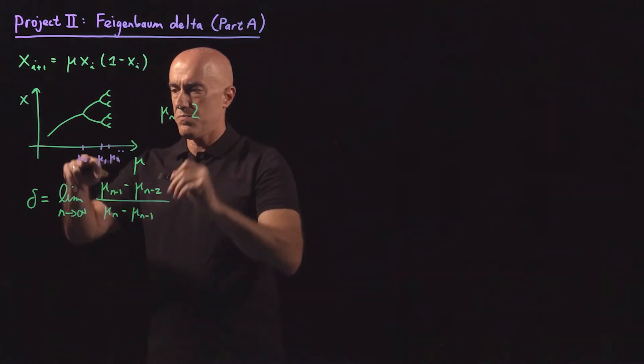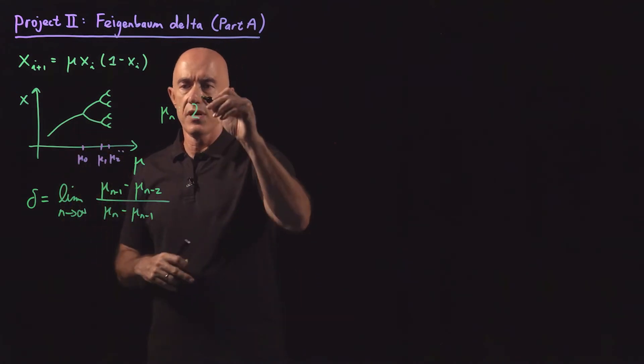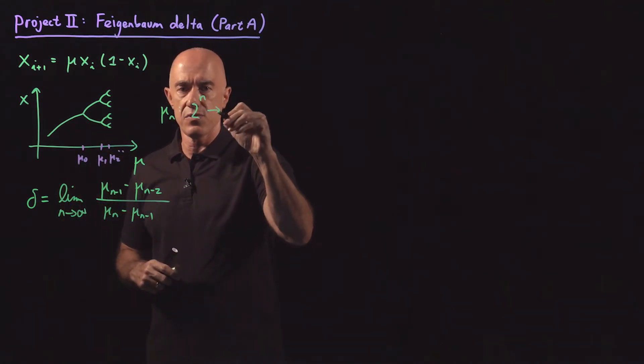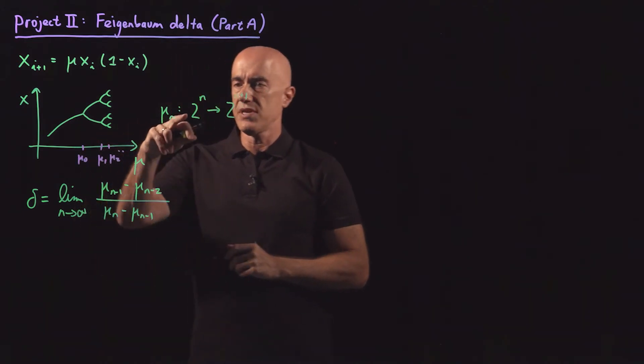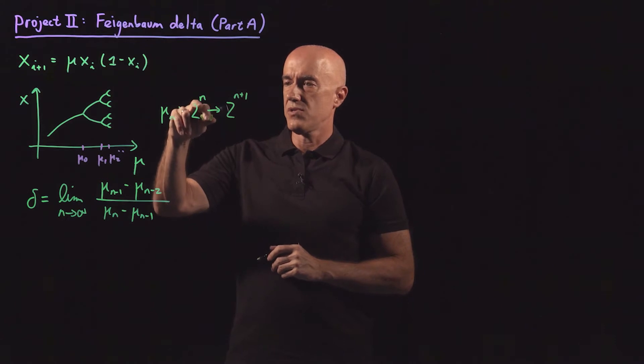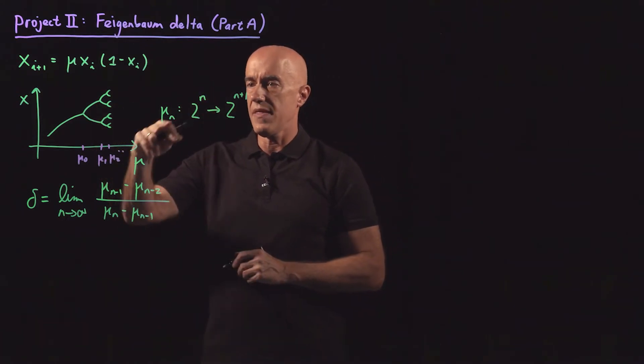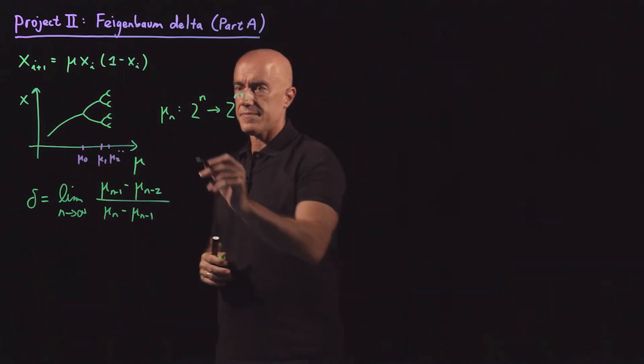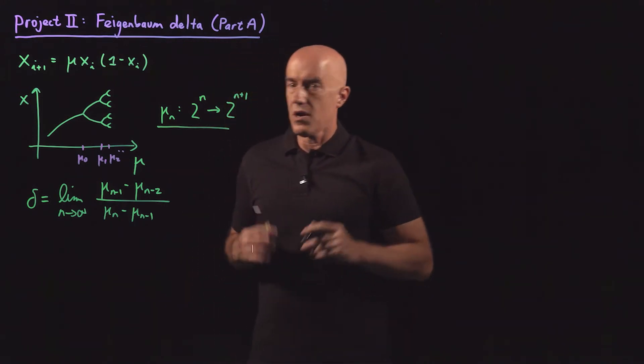So mu sub n here is the bifurcation value of mu when we go from period 2^n to period 2^(n+1). So mu 0 goes from period 2^0, which is 1, to period 2. Mu 1 then goes from period 2 to period 4. That's our definition.